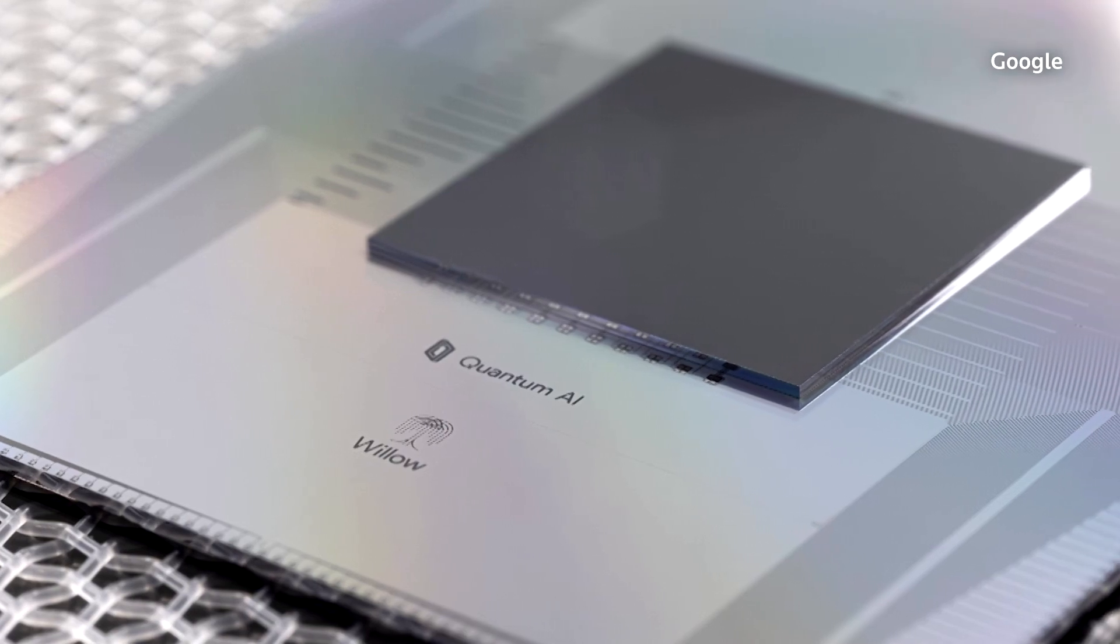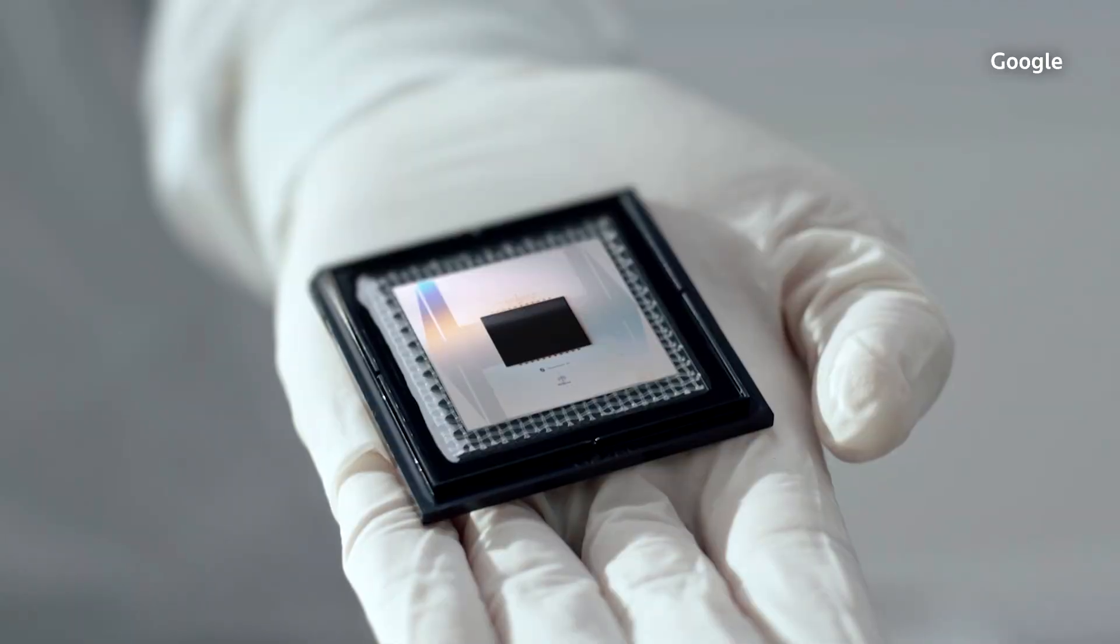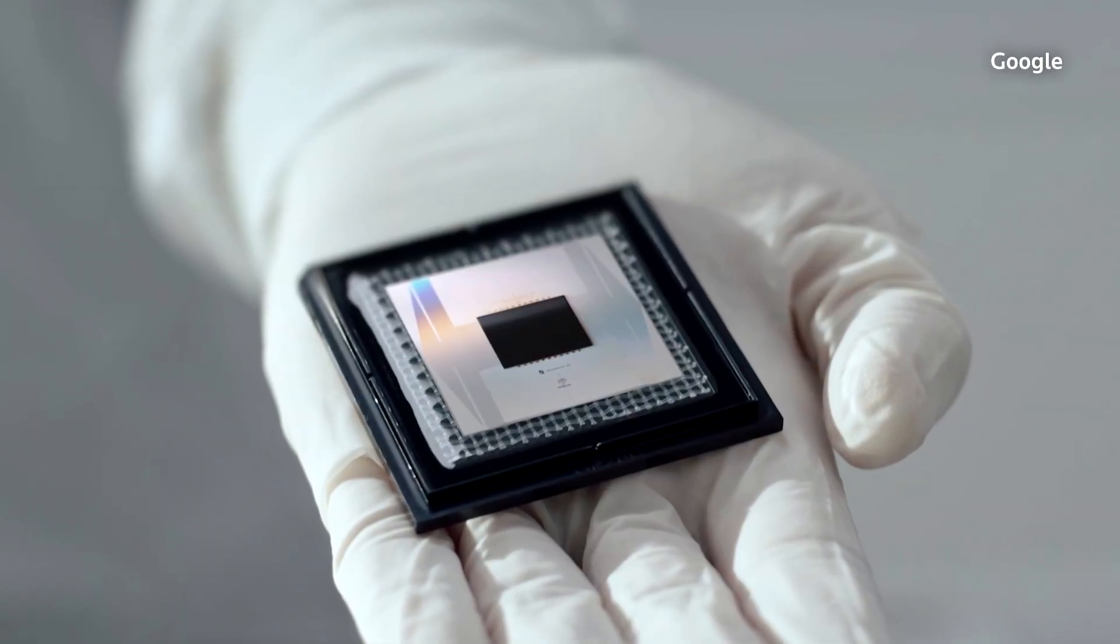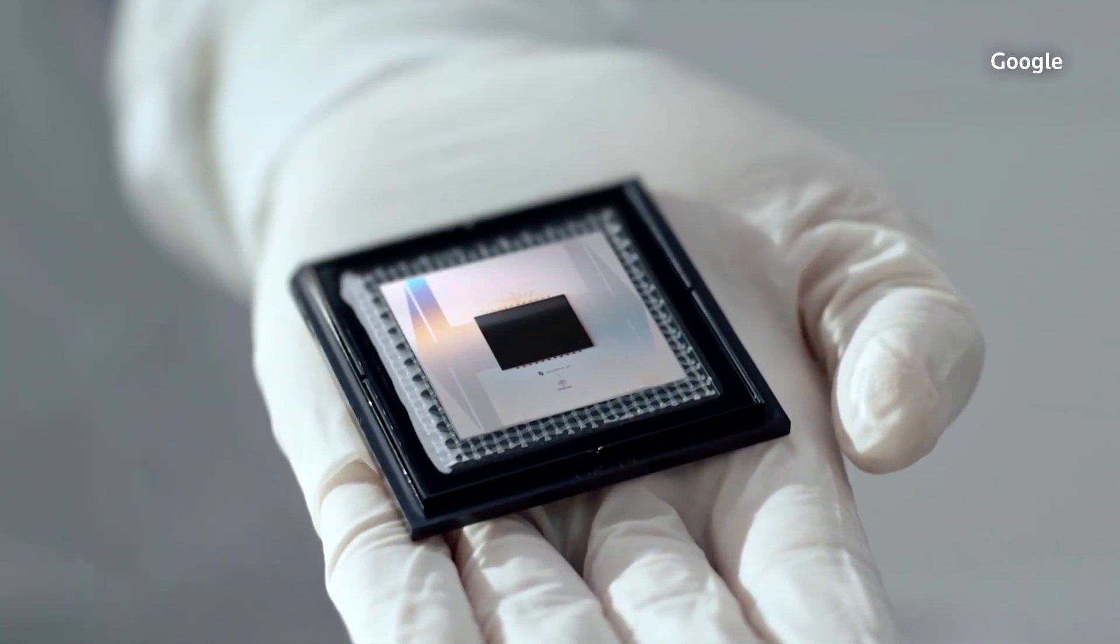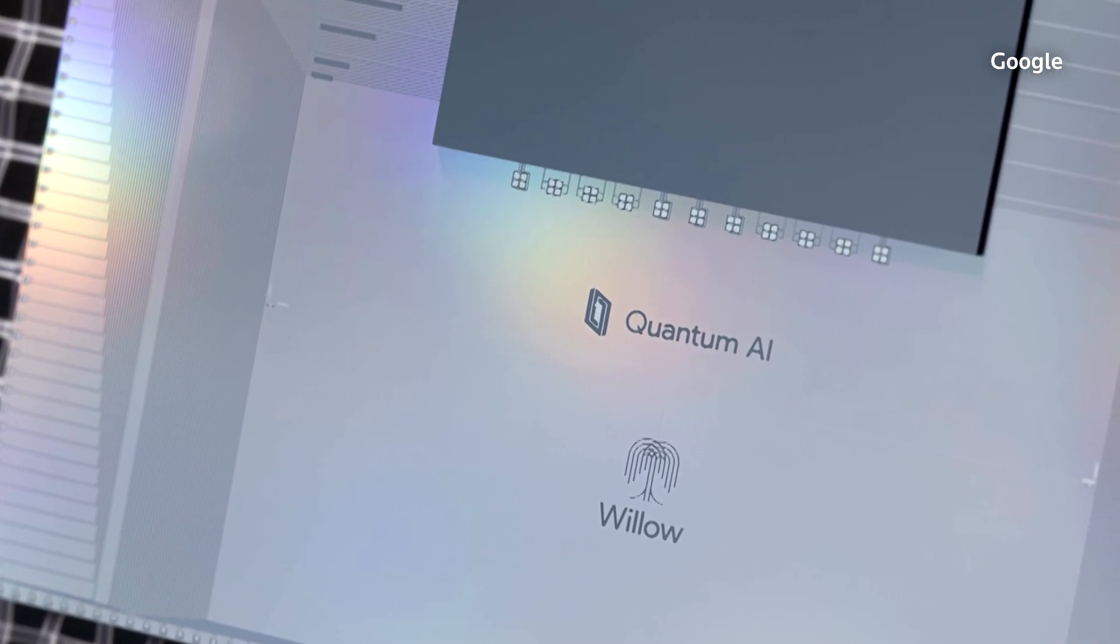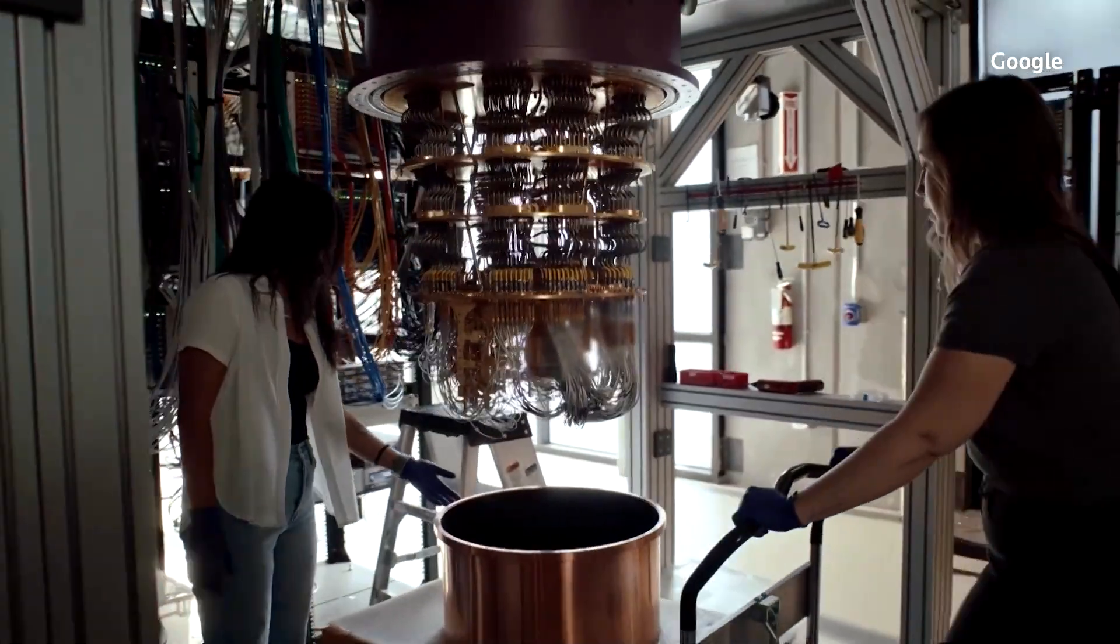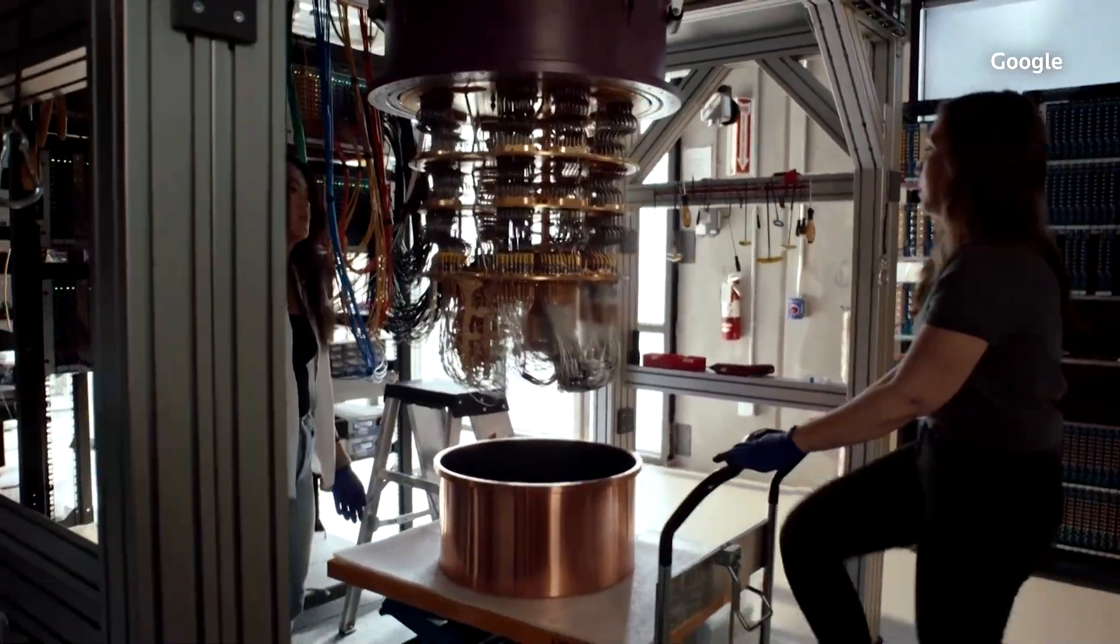They are super fast but also very error-prone and can be upset by something as tiny as a passing subatomic particle. Now Google says it's found a way to make them more reliable and can correct errors in real time. That's a big step towards building a practical quantum computer.